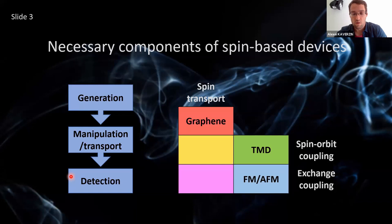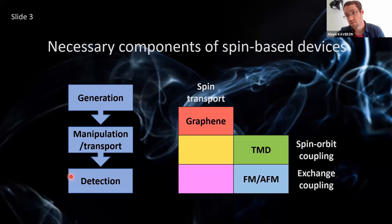Graphene is our primary choice as a basis for all our heterostructures when we want to talk about spin-based devices. But the generation, detection, or manipulation of the spin signal when it's in graphene cannot be done by graphene itself, so it has to be introduced from the outside world. It can be done by different layered materials, such as transition metal dichalcogenides or other ferromagnetic or anti-ferromagnetic materials.